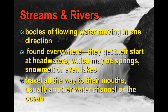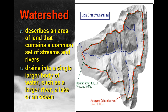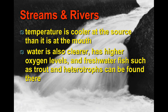Now let's focus on streams and rivers — basically moving water. They originate at the top of a mountain or higher peak, which is considered the headwaters, and eventually flow to the end of the river called the mouth. The area where this water flows is called a watershed, like a drainage basin. Temperatures at the headwaters are much cooler, oxygen levels are higher, and the fish you'll find there are trout.